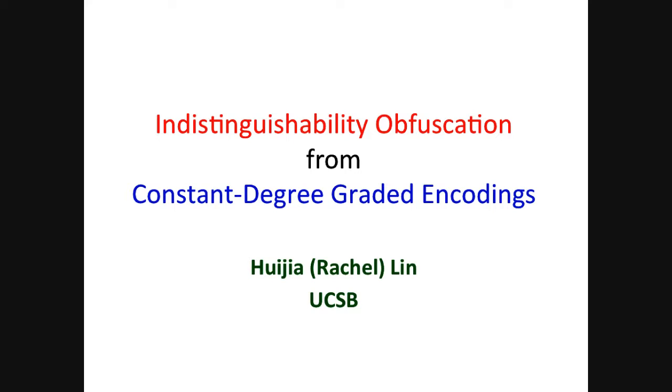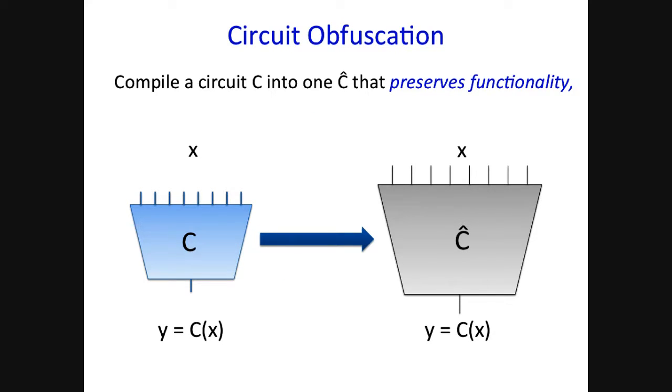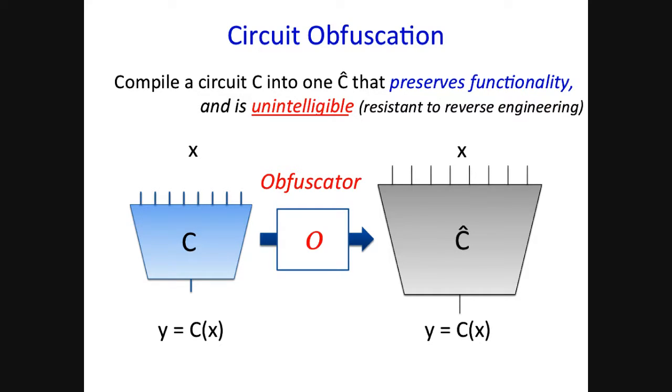So the second talk of the session is Indistinguishability Obfuscation from Constant Degree Graded Encoding by Ujjal Lin. Thank you for the introduction. Can you hear me well? All right. So today we're going to talk about circuit obfuscation. This is a primitive that aims to compile a circuit into one that preserves the functionality, meaning that the compiled circuit should produce the same outputs on every input and becomes unintelligible. Intuitively means that it resists any reverse engineering, trying to figure out what is some valuable information embedded in the original circuit. We call such a compiler an obfuscator.